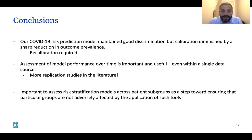Number one, our COVID-19 risk prediction model maintained good discrimination. The AUC was comparable between the training period and the replication period. But the calibration was diminished by a sharp reduction in outcome of COVID severity, COVID severe disease and death. And probably to fix this, we need to do some recalibration of the model.